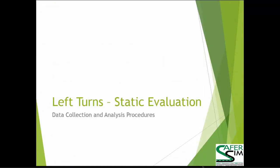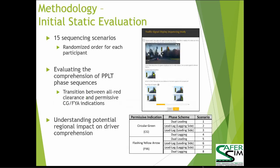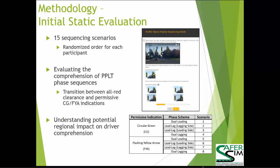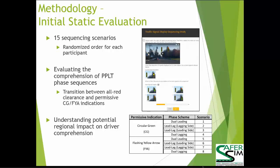Now discussing the left turn static evaluation. We developed a static evaluation using the SurveyMonkey platform. In the survey, participants were shown a video of a signal sequence that could be played multiple times. The video displayed a randomized protected-permissive sequence, including both the circular green in a cluster head as well as the flashing yellow arrow in a four-section vertical signal head. The current signal display shown was the last signal in the sequence, and participants were asked to predict the next signal they would see.